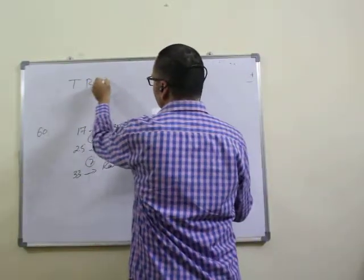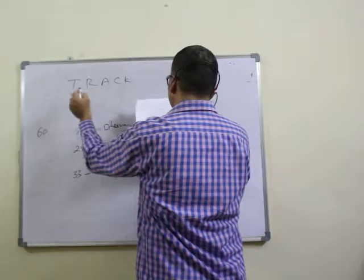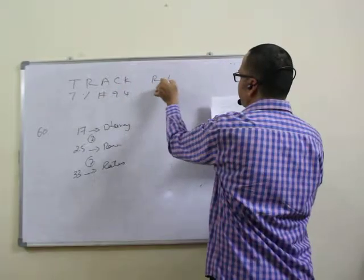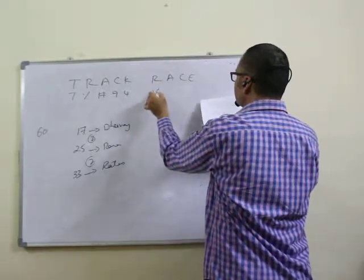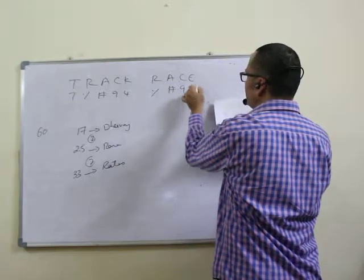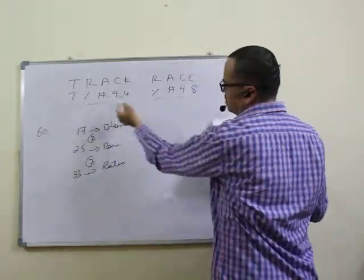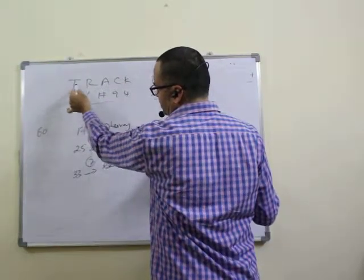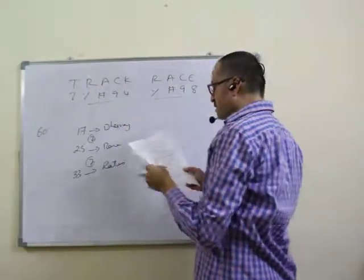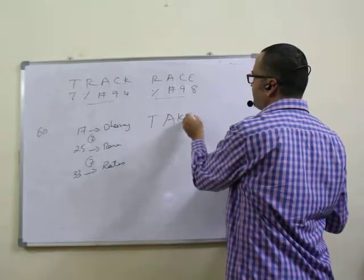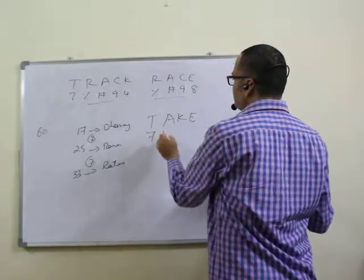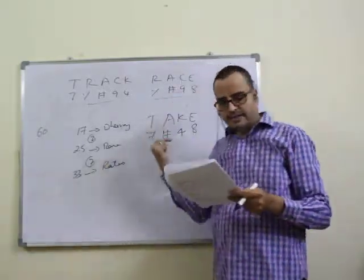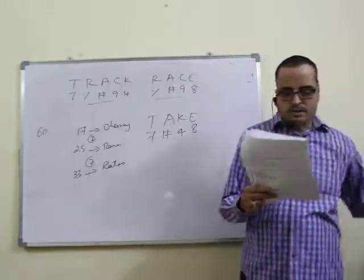Question fifteen is coding-decoding. 'Track' is coded as 7 % # 9 4; 'race' is coded as % # 9 8 — three symbols are common. Matching letter positions: T equals 7, A equals #, K equals 4, E equals 8. Using this mapping, the answer is found. Fifteenth question answer is second option.